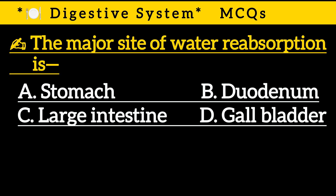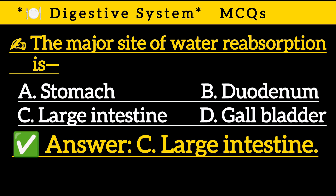Question 21: The major site of water reabsorption is — Option A: Stomach, Option B: Duodenum, Option C: Large intestine, Option D: Duodenum. Correct answer is Option C: Large intestine.